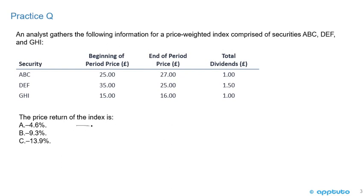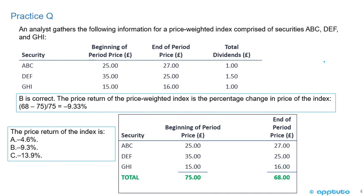The question asks for the price return of the index. Is it A, negative 4.6%; B, negative 9.3%; or C, negative 13.9%? It's important to note this is a price-weighted index and we're being asked to calculate the price return. Reading the question carefully to identify the weighting method is critical when doing these calculations.